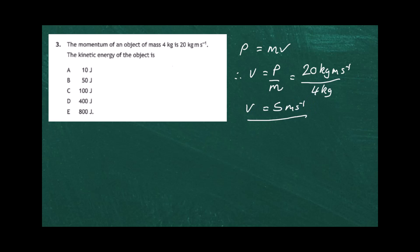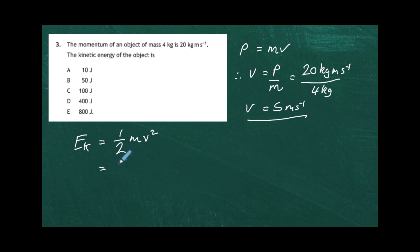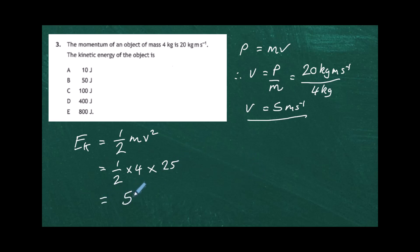Now we use the kinetic energy formula: Ek equals one half times mass times speed squared. Plugging in the values: one half times 4 times 5 squared equals one half times 4 times 25, which gives 50 joules. The answer to question 3 is B.